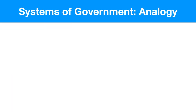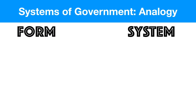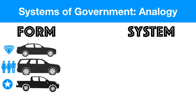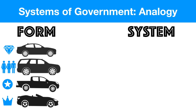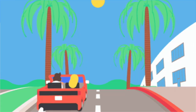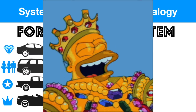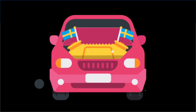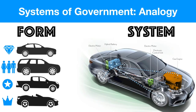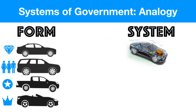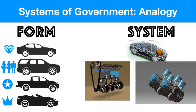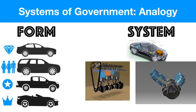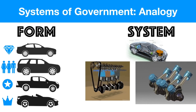The analogy I like to use between forms and systems of government is that a form of government is like a type of car. We could have an oligarchy in a sedan, a democracy in an SUV, a dictator in a truck, a monarchy in a convertible. Spain, the UK, Thailand, and New Zealand are all driving a convertible because they all have a monarch. But their systems of government — what's under the hood — might be very different. The system of government focuses on the engine inside: how is power moving around in that country?